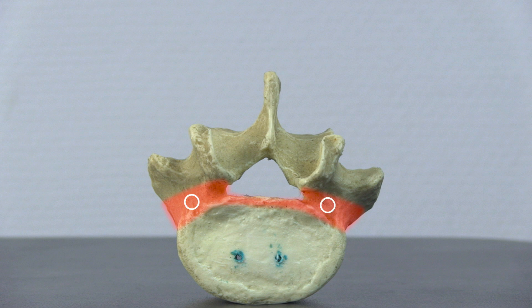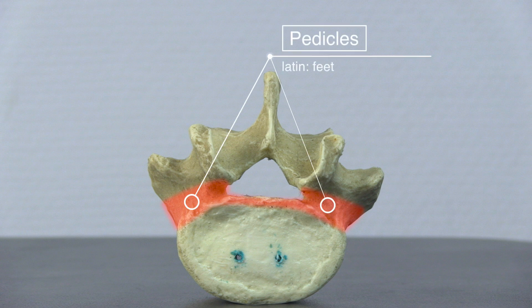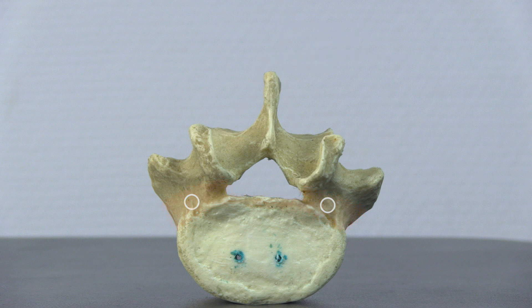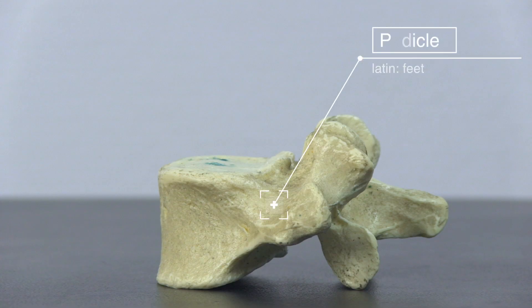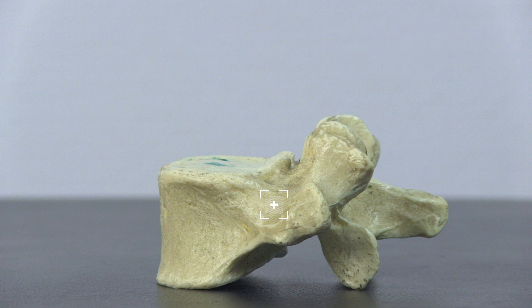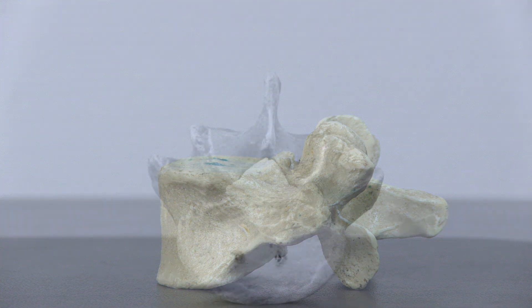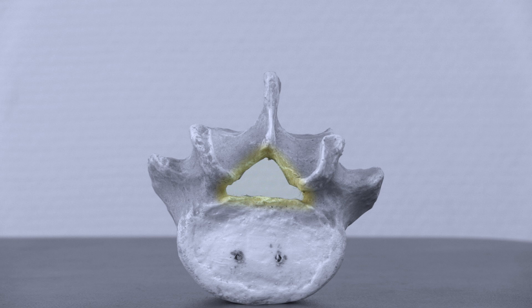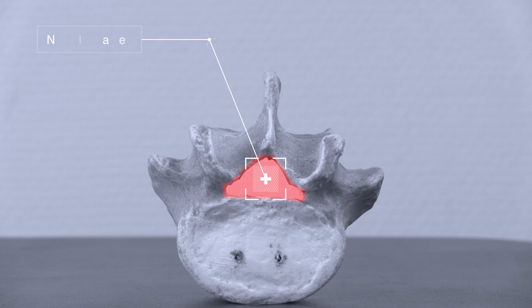If we go a bit more posterior, we come across two sturdy pillars of bone called the pedicles, which means 'feet' in Latin. From the side, you can see that they attach to the upper part of the vertebral body, which can help you identify the top and bottom of a vertebra. The whole arch of bone attached to the vertebral body is called the neural arch, which forms the neural foramen, where the spinal cord is passing through.